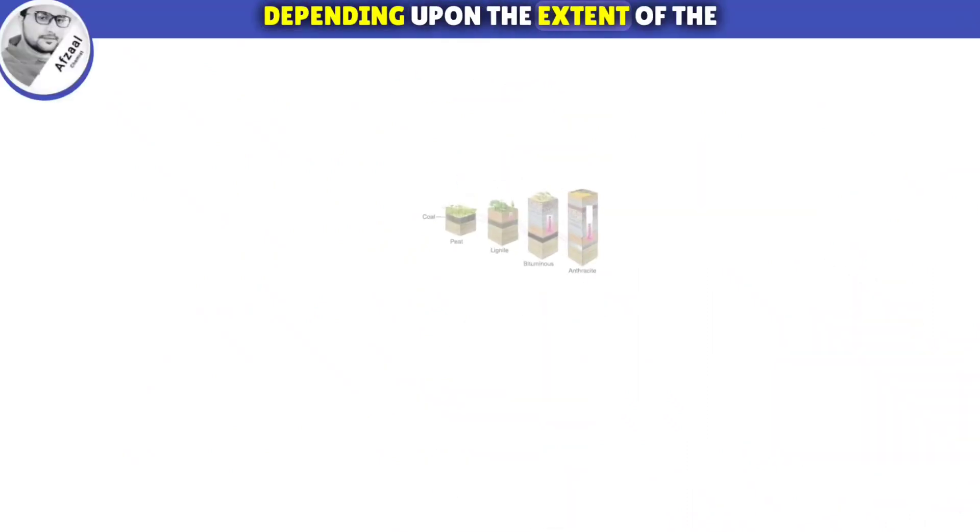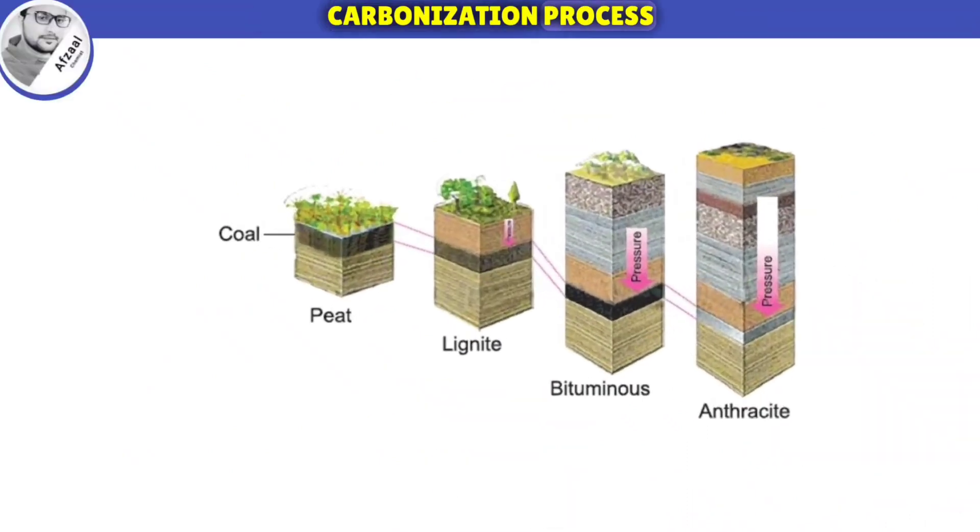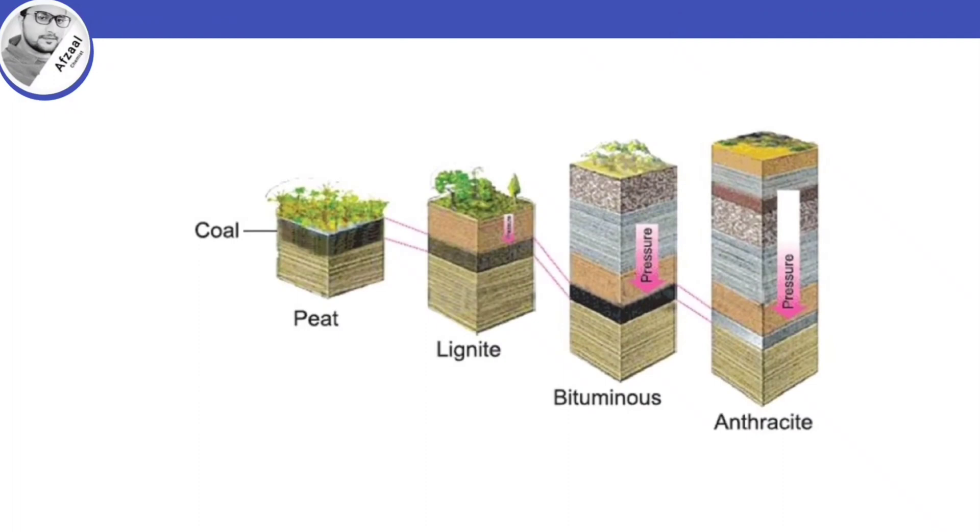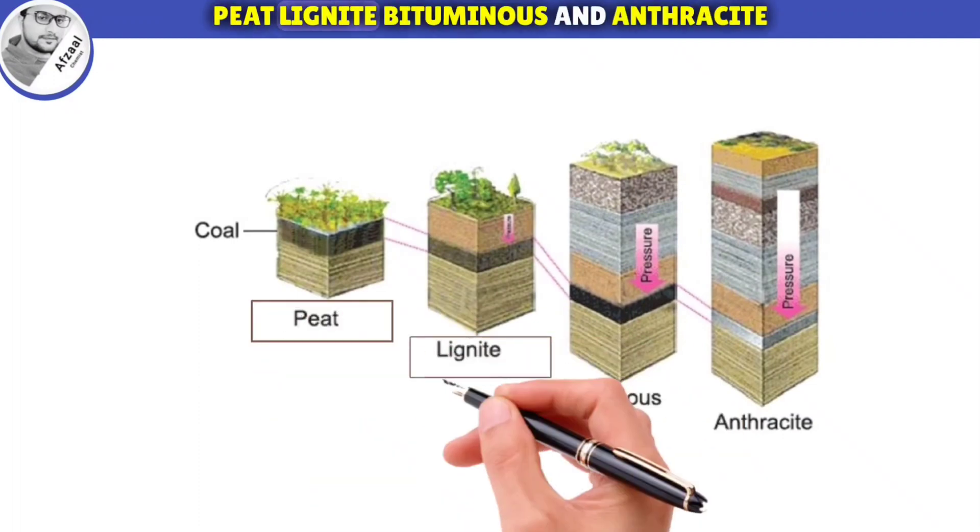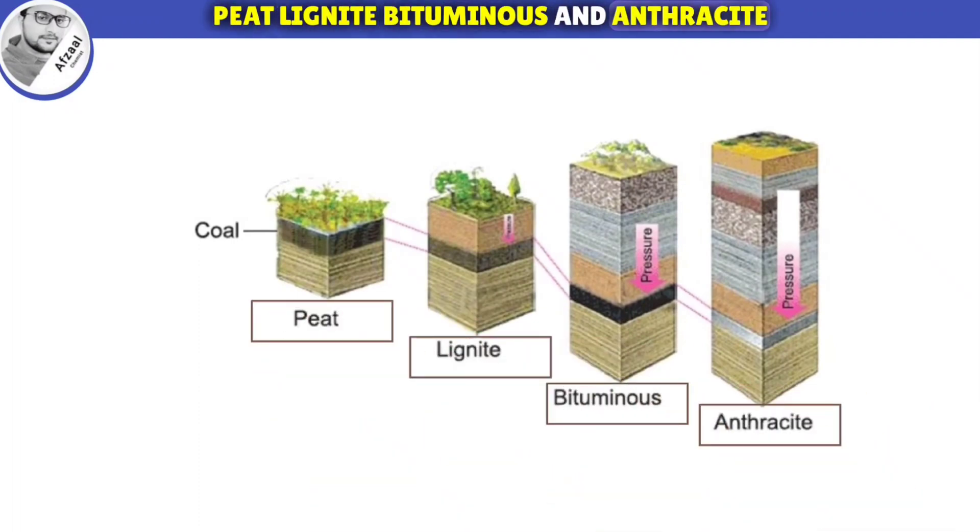Depending upon the extent of the carbonization process, four types of coal are found: peat, lignite, bituminous, and anthracite.